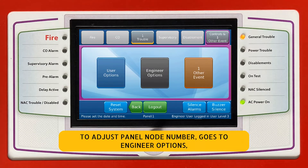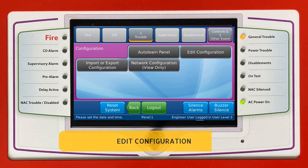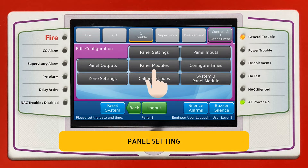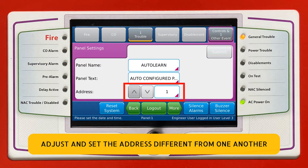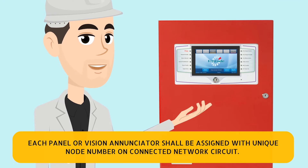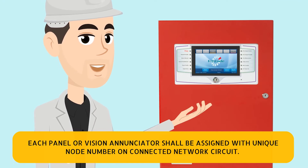To adjust the panel node number, go to Engineer Options, then Configuration, then Edit Configuration, then Panel Setting. Adjust and set the address to be different from one another. Each panel or vision enunciator shall be assigned a unique node number on the connected network circuit.